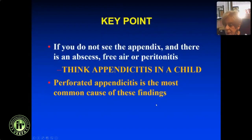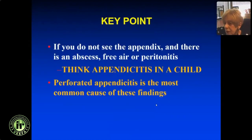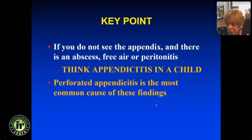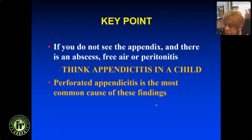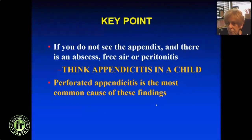You're not going to see the appendix in perforation half the time, but if there's an abscess, free air — not that common — peritonitis, or other secondary findings, think appendicitis. It is the most common cause of these findings in children. In adults you have a range of diagnoses like diverticulitis or ischemic bowel, but that's not the case in children. If you see an abscess or complicated findings, think appendicitis.